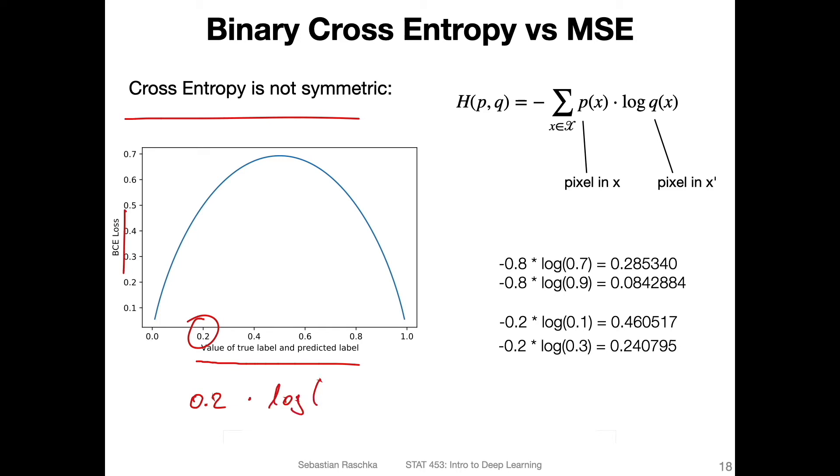It should be minus cross entropy. Oh yeah, for reference, I have it also here. So recall the binary cross entropy from the logistic regression class: we have a probability here, the probability here. Usually in the logistic regression context, this was either one or zero. Now we have values between zero and one.